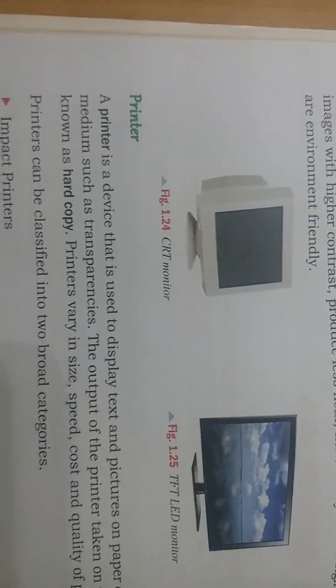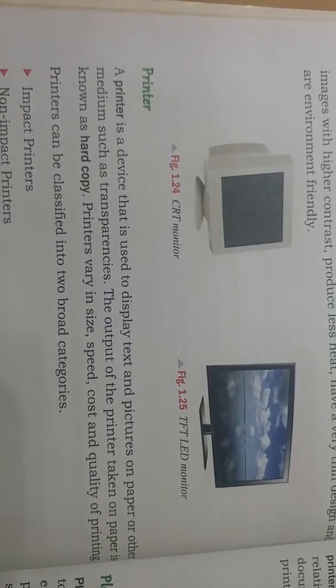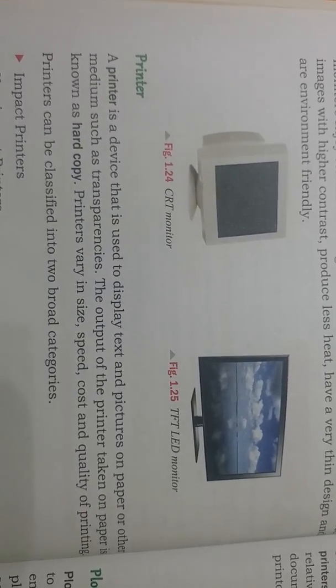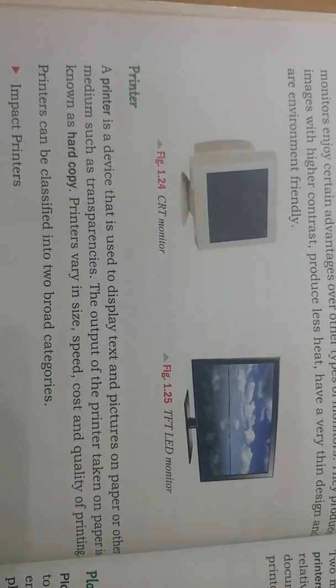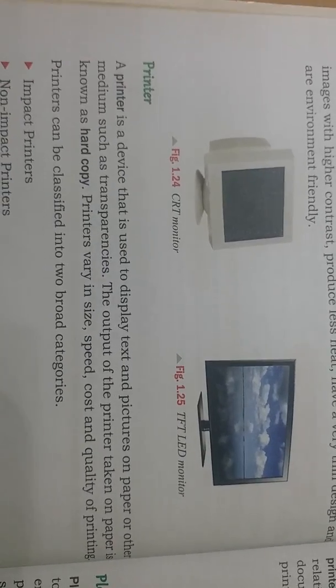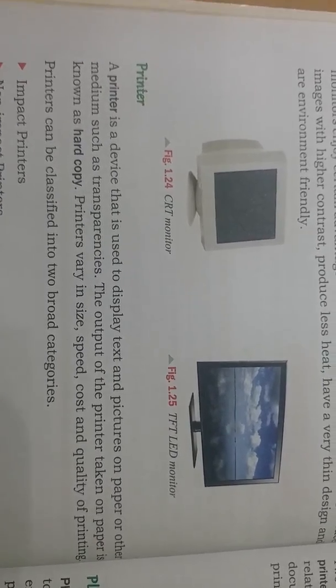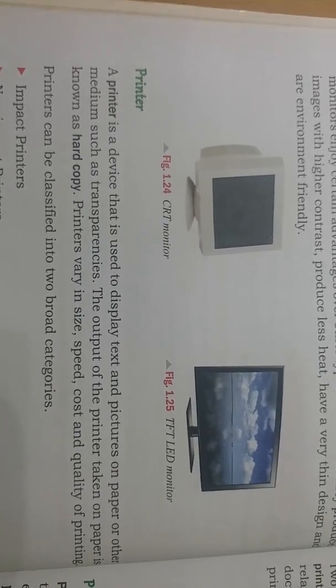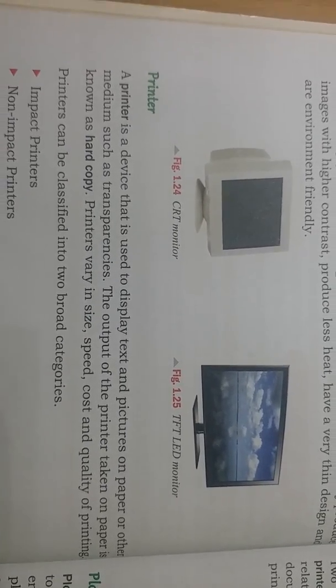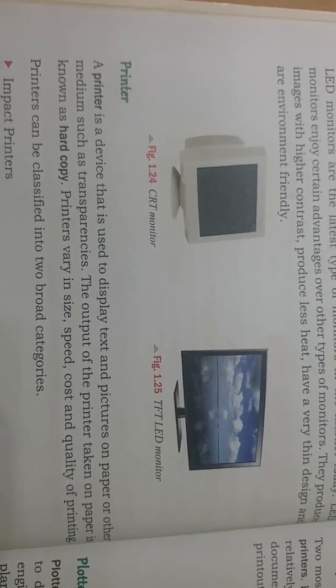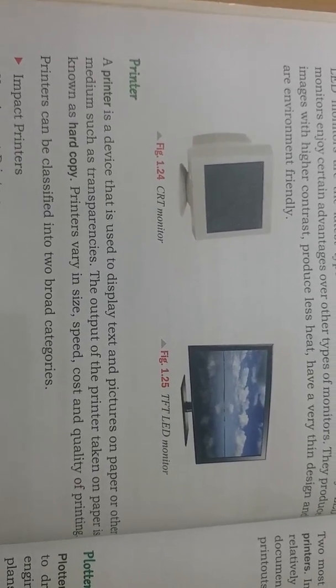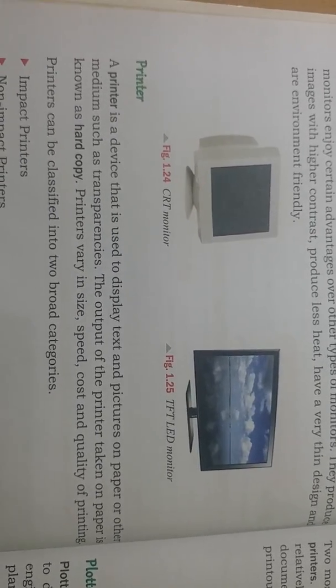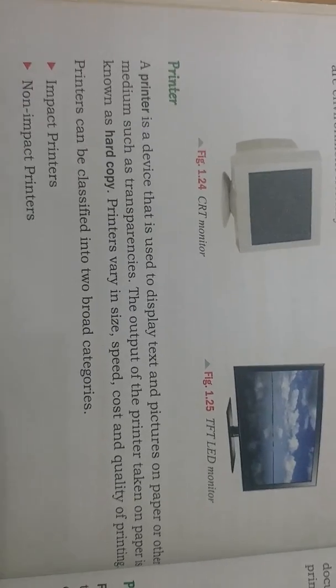A printer is a hard copy output device where we can get a printout on paper or transparency. The output taken on paper is known as a hard copy. Printers vary in size, speed, cost, and quality of printing. On the basis of these characteristics, printers are further classified into two categories: impact printers and non-impact printers.